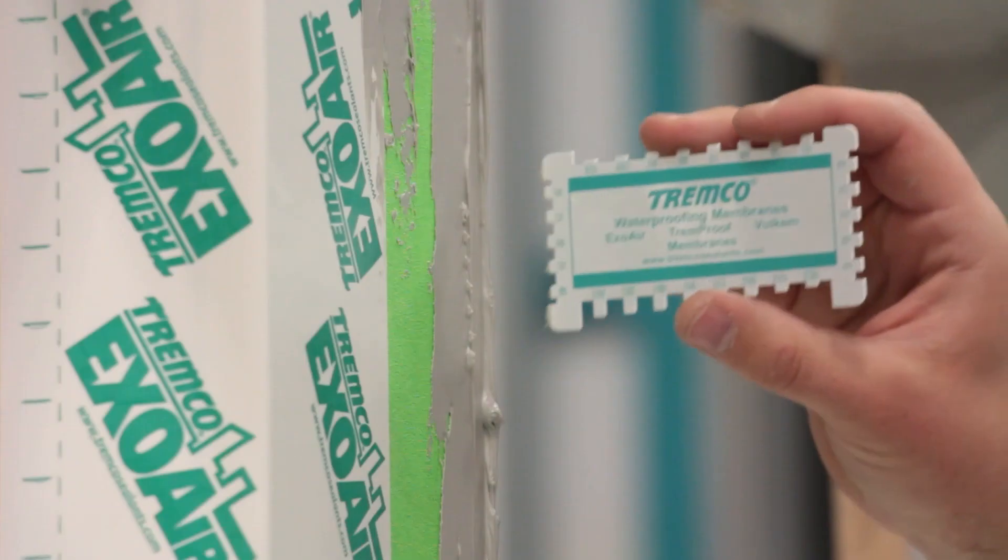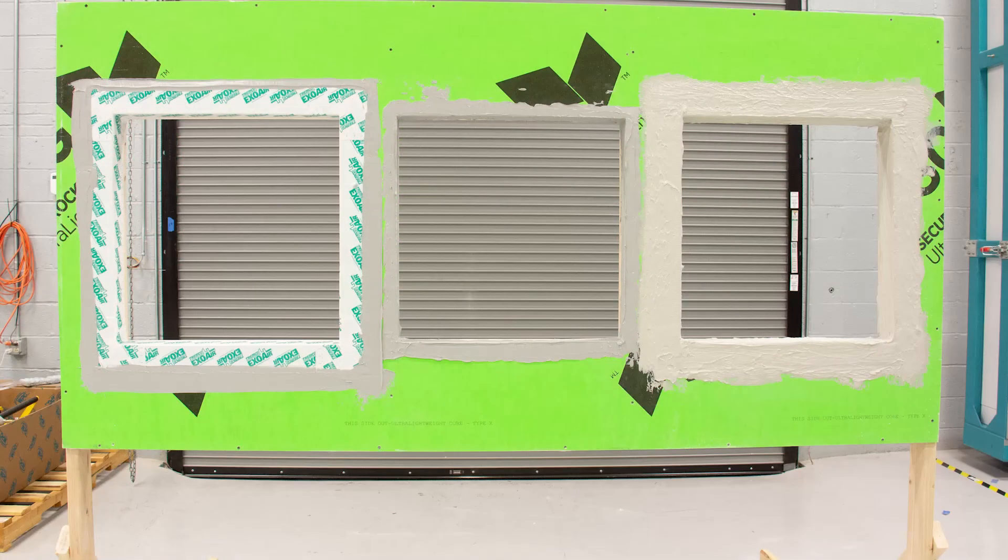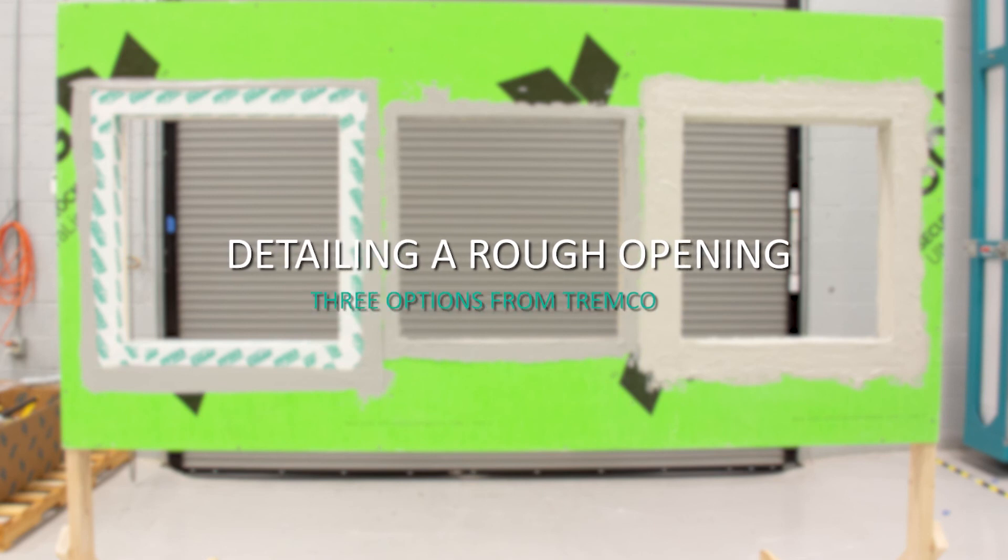This concludes the three options for detailing a rough opening. Please refer to Tremco's written application instructions for further details.